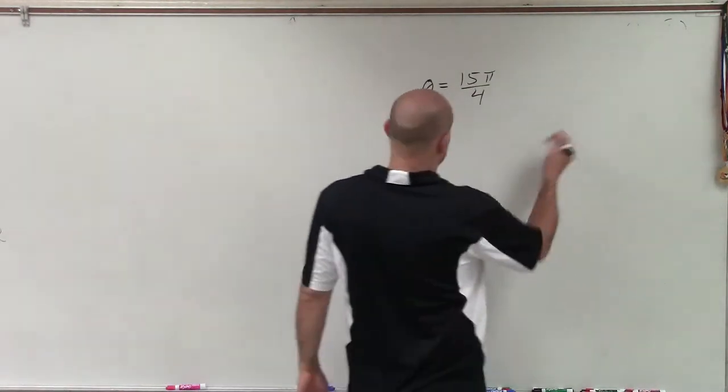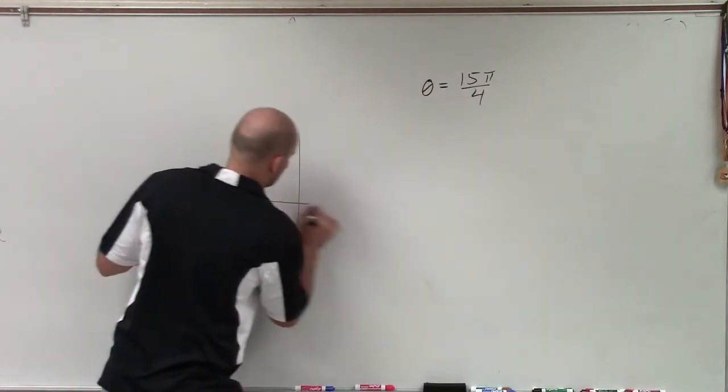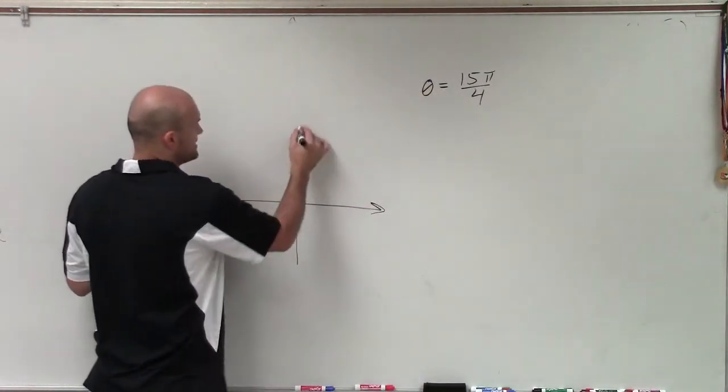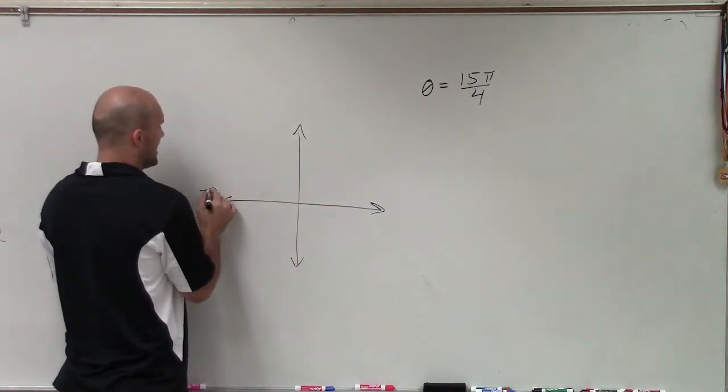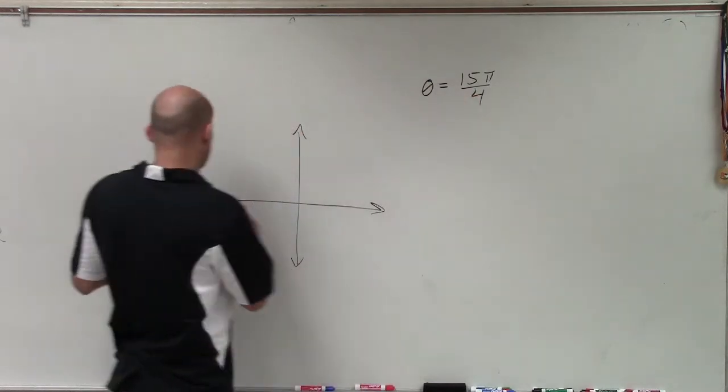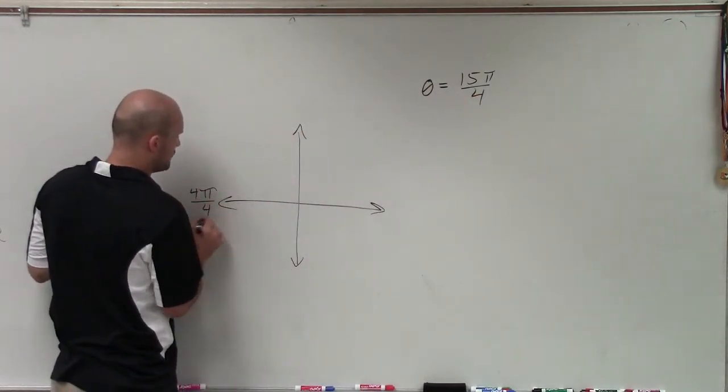So a lot of times what I'm going to do is show you a graph representation of 15 pi over 4. Now remember, halfway around a circle is pi. But what I like to do is take the denominator and rewrite that as 4 pi over 4.